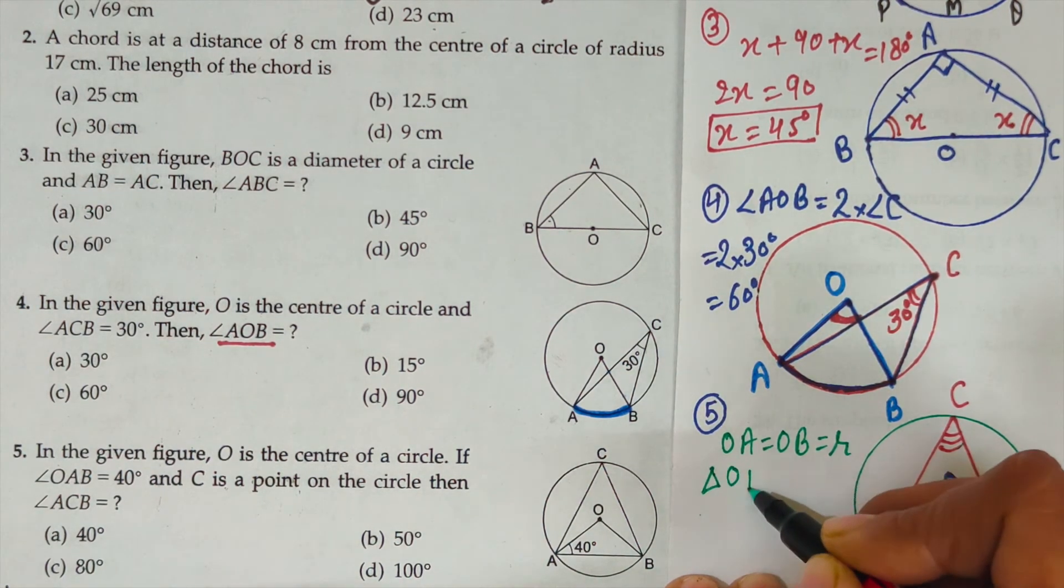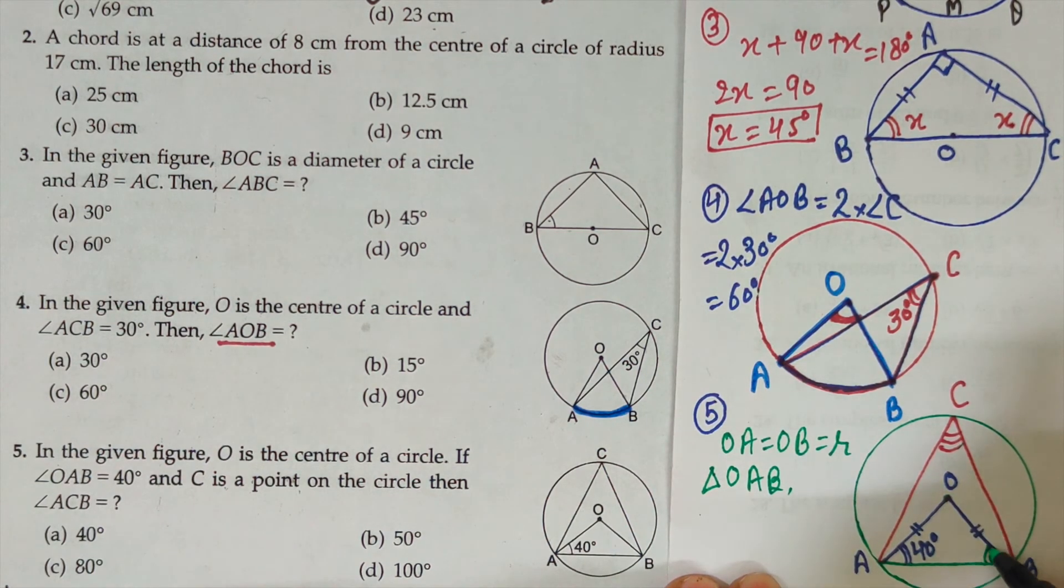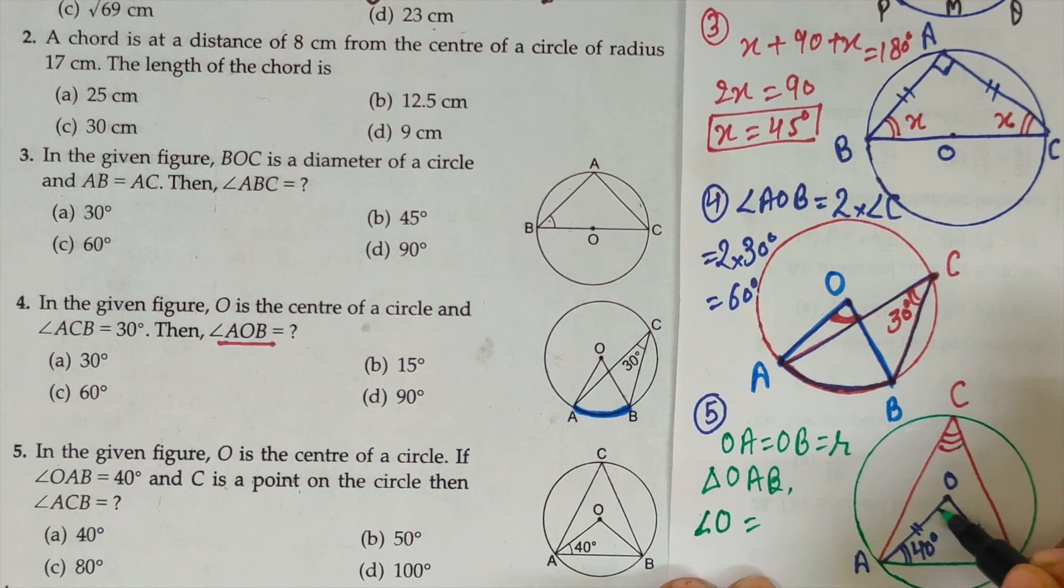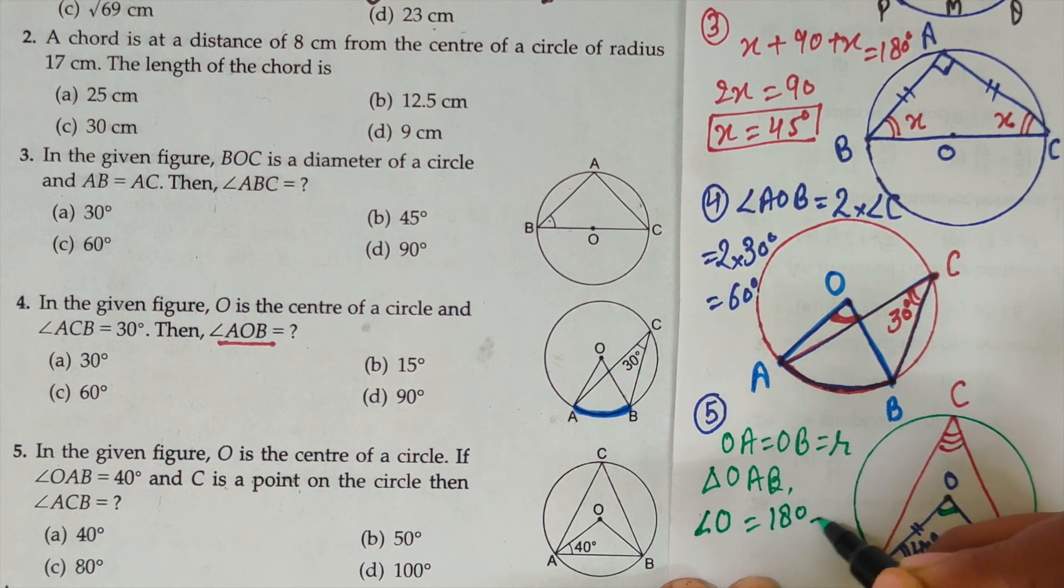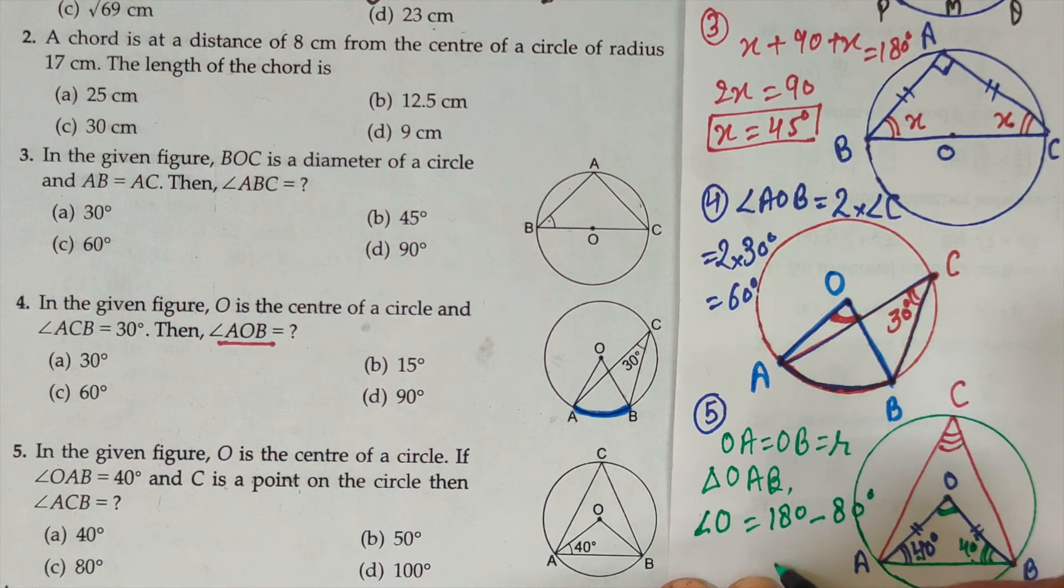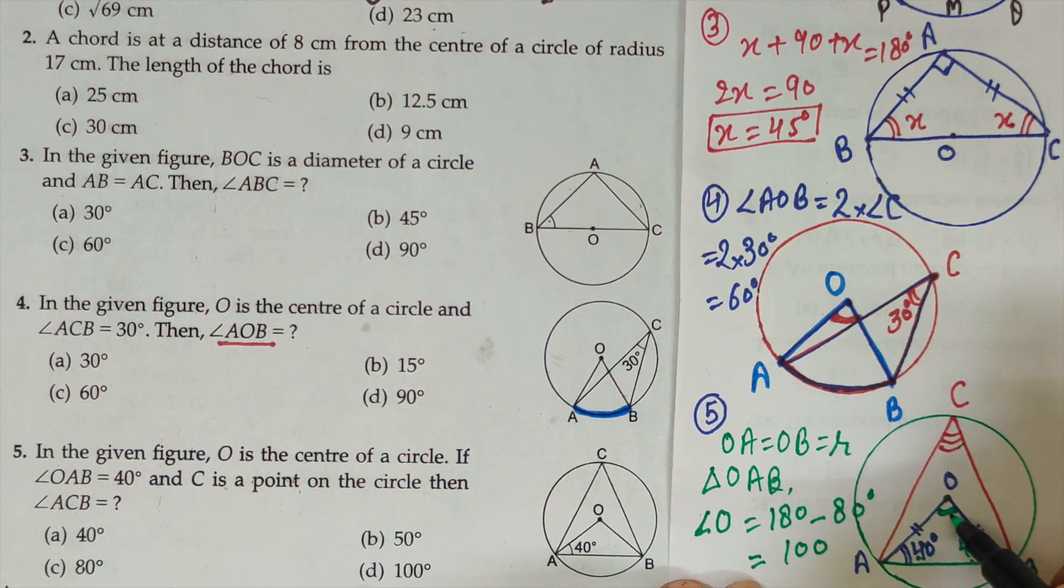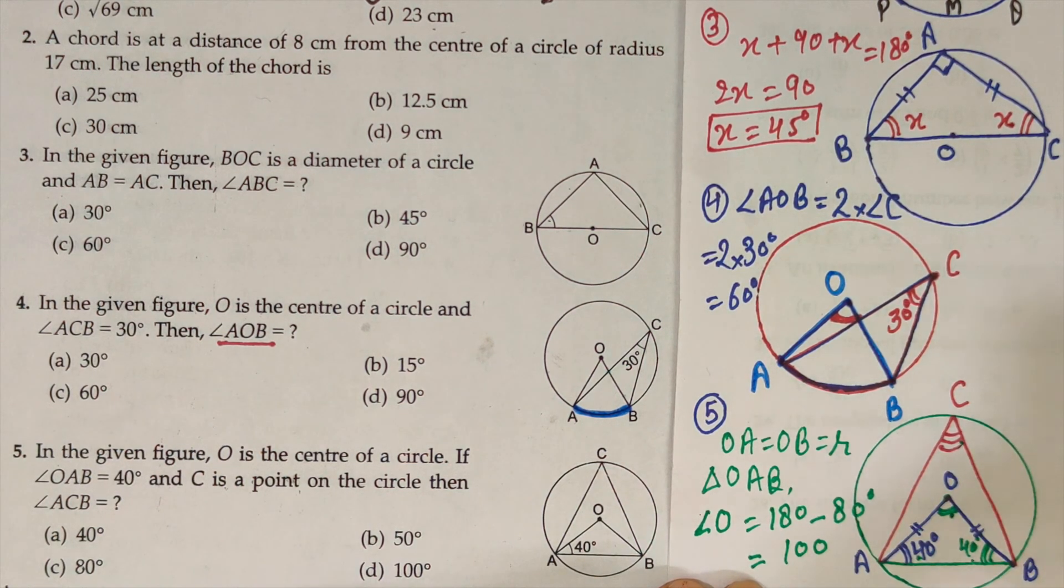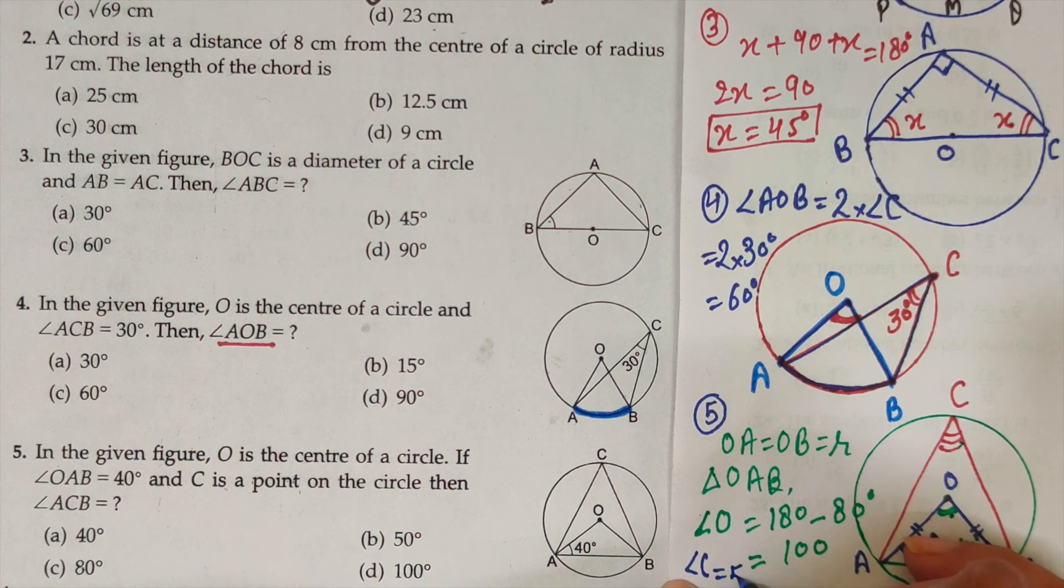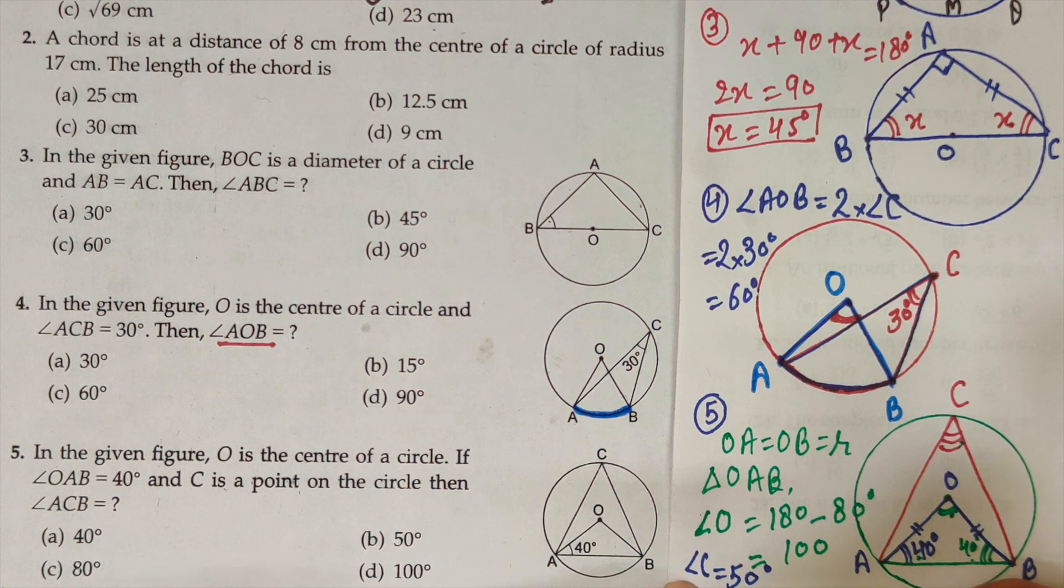So what about this angle? This is 40 degree, so the other angle will also be 40 degree. Both angles are 40, 40 degree. So can we calculate angle O, the angle at the center? Yes, 180 minus 40 and this also 40 degree, both are equal. So 180 minus 80. Angle sum property says angle at center becomes 100. And we recently studied the theorem that center angle is twice the boundary angle. Center angle is double, so what can we say about angle C? Angle C should be half. So angle C will be 50 degree.